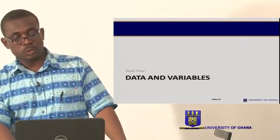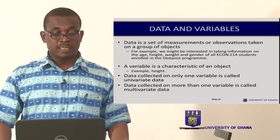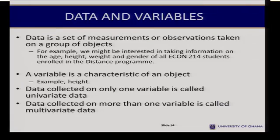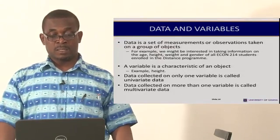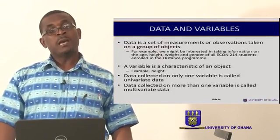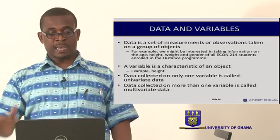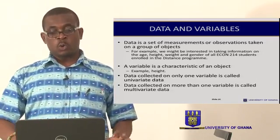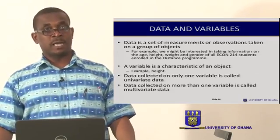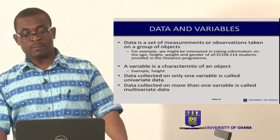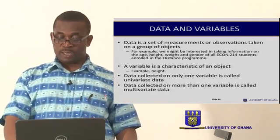We now turn our attention to data and variables. When we talk about data, we are looking at a set of measurements or observations taken on a group of objects. For example, we might be interested in taking information on the age, height, weight, and gender of all ECON 104 students enrolled in the distance program. A variable is a characteristic of an object, for example, looking at just the height. Data collected on only one variable is called univariate data, whereas data collected on more than one variable is called multivariate data.